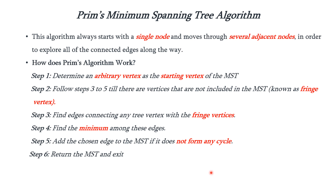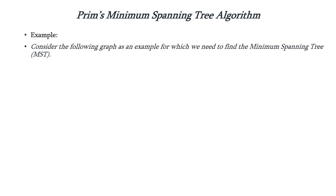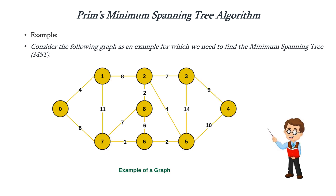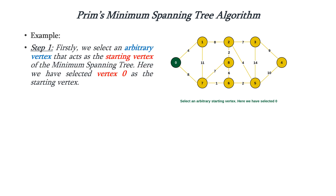These are the steps of Prim's algorithm. Now let us discuss the concept with an example problem. Consider this graph which has 9 vertices and 14 edges — we already used the same graph for Kruskal's algorithm. First step is we have to choose the vertex which acts as the starting vertex. In this example we are choosing 0 as the starting vertex and adding it to the MST. We are changing the color of that particular vertex, and this green color indicates that it is part of the MST.